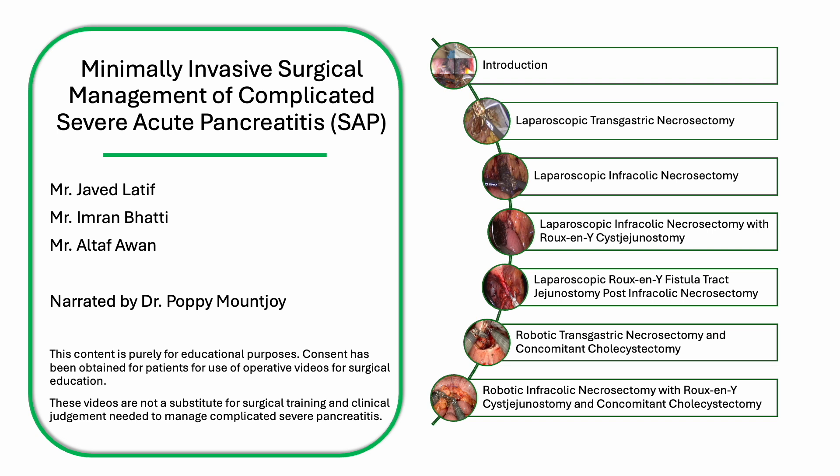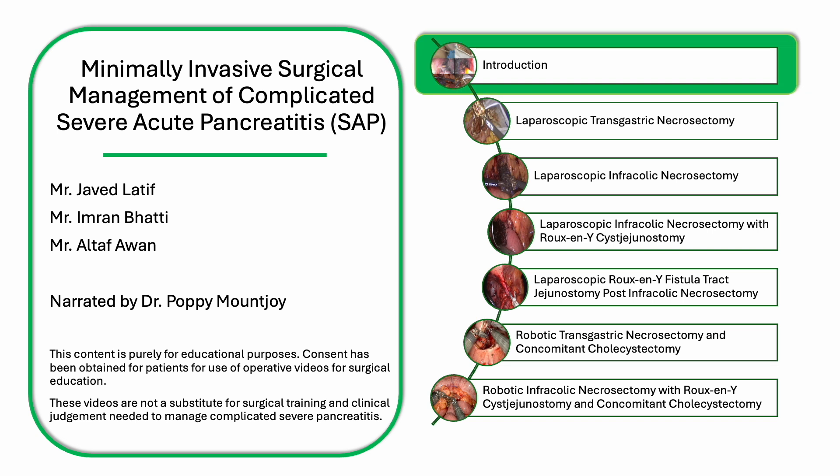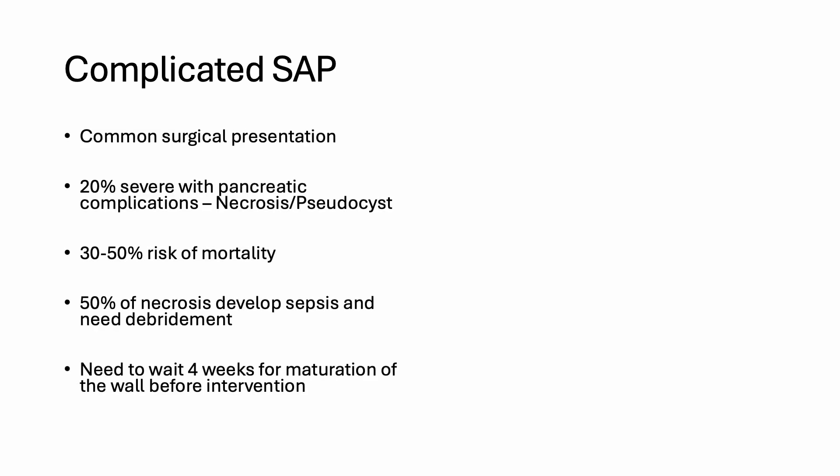The first video in this series will be the introduction to complicated SAP. Complicated severe acute pancreatitis is a common surgical presentation. 20% of patients will develop severe pancreatitis with pancreatic complications such as necrosis or pseudocyst. In this subset of patients, there is a 30 to 50% risk of mortality. And in those with necrosis, 50% will develop sepsis and need debridement.